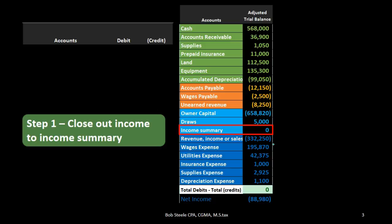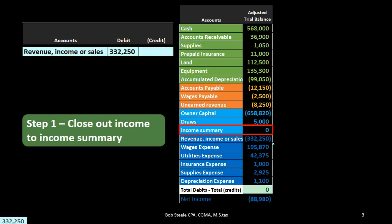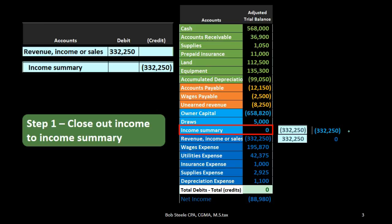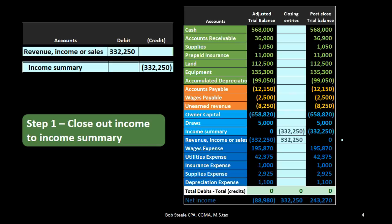Journal entry-wise, in order to do that, we see it has a credit balance represented by the brackets. We need to do the opposite — a debit — for everything in there, the $332,250. If we post that debit, it will take the revenue account to zero, which is the goal. Then we need to credit something. Ultimately we want it in the capital account, but we're first going to put it into the income summary, that clearing account. The clearing account goes up in the credit direction to $332,250. In essence, all we've done is move the revenue up to the income summary account.